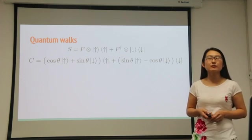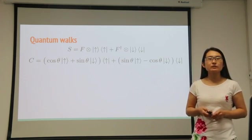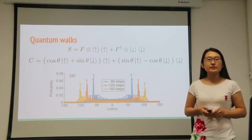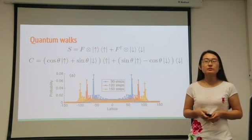Here, F is the forward propagator and F dagger is the backward propagator. The repeated action of these two operators on the walker yields a bimodal probability distribution.